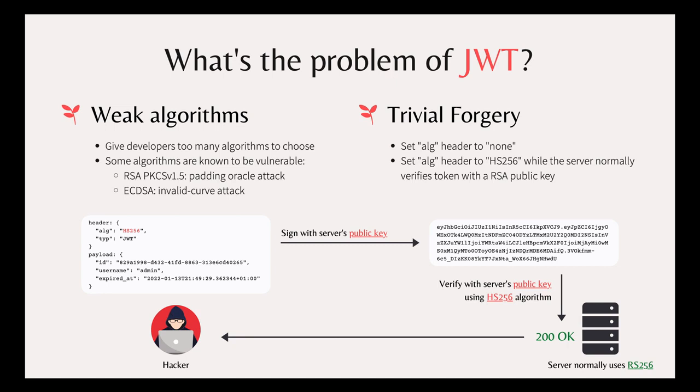So in order to prevent this attack, it's crucial that in your server code, you must check the token's algorithm header to make sure that it matches with the one your server uses to sign and verify tokens. Now you know why JSON Web Token is not a very well-designed standard — it opens the door to many potential threats. Therefore, many people are trying to stay away from it and migrate to something more robust.